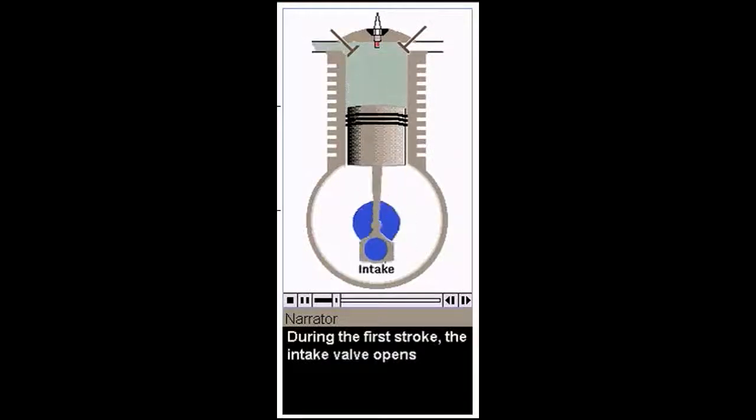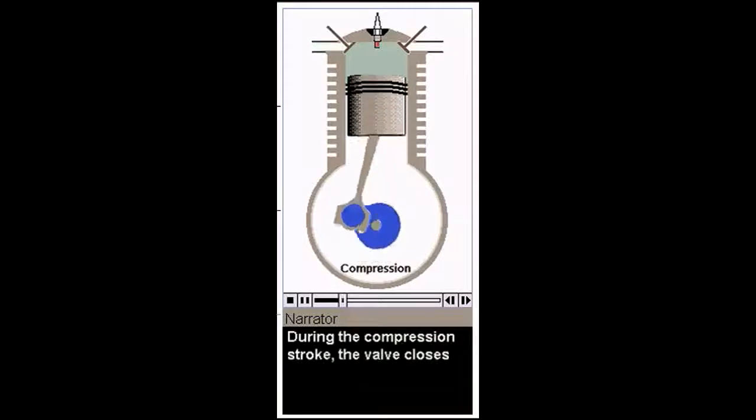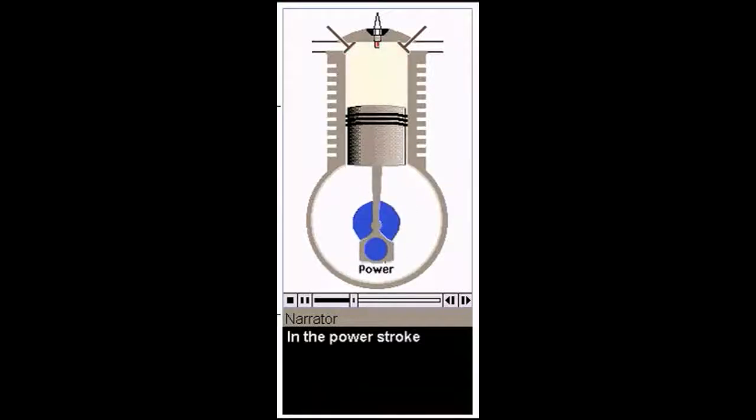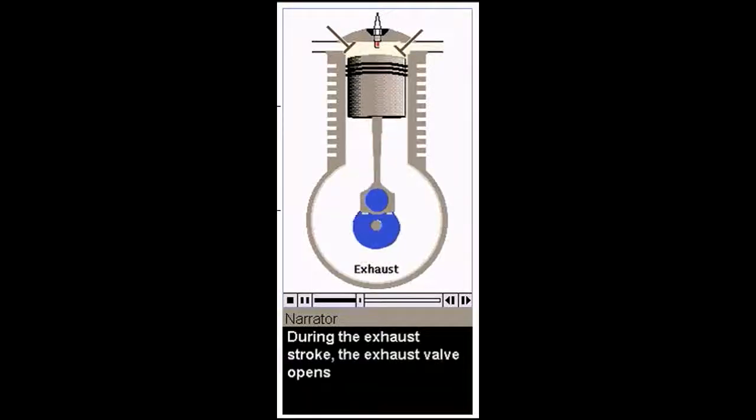During the first stroke, the intake valve opens, the piston moves down, and the fuel and air mixture is drawn into the cylinder. During the compression stroke, the valve closes, the piston moves up, and the mixture is compressed. In the power stroke, the spark plug produces an electric spark, the fuel ignites, and forces the piston down. During the exhaust stroke, the exhaust valve opens, the piston rises, and the gases are pushed out of the cylinder.